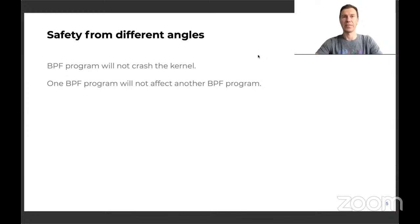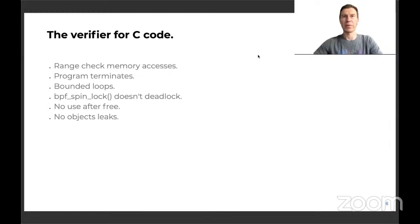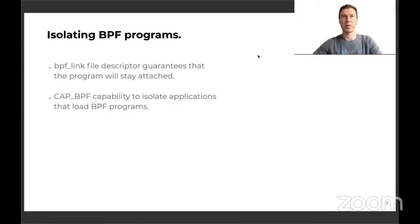That is a different angle of safety. In the early days of BPF, everyone was focused on making sure the program cannot harm the kernel — checking that all memory accesses are within range, that the program terminates, loops are bounded, the usage of BPF spinlock helper will not cause deadlock, there is no use-after-free when an object is freed, reference-counted objects don't leak out of the program. Nowadays, hundreds of BPF programs are running at the same time. It became important to isolate one program from another. Having a file descriptor to a BPF program guarantees the program will not be unloaded.